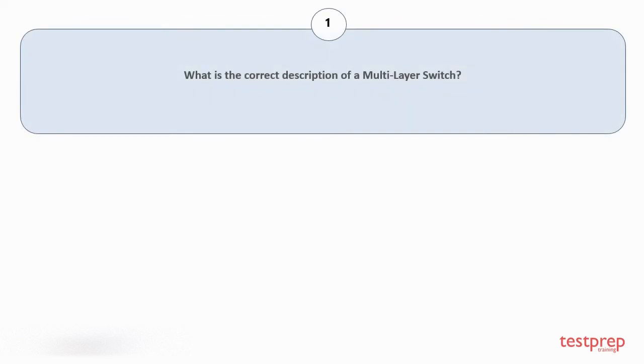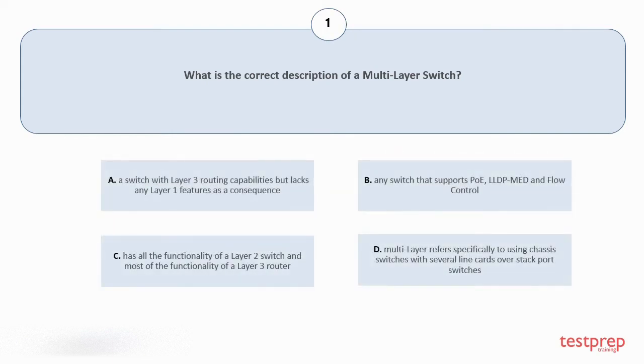Question number 1, What is the correct description of a multi-layer switch? Your options are: a switch with layer 3 routing capabilities but lacks any layer 1 features as a consequence; any switch that supports PoE, LLDP, MET and flow control; has all the functionality of a layer 2 switch and most of the functionality of a layer 3 router; multi-layer refers specifically to using chassis switches with several line cards over stack port switches. The correct answer is option c.